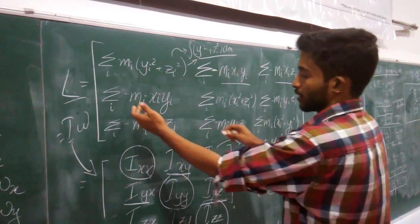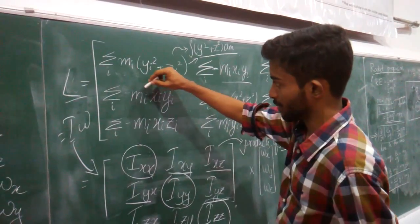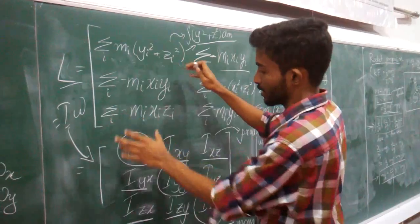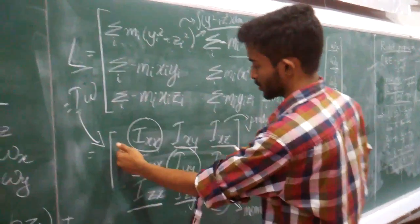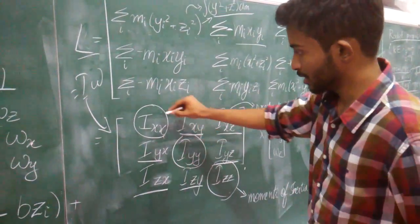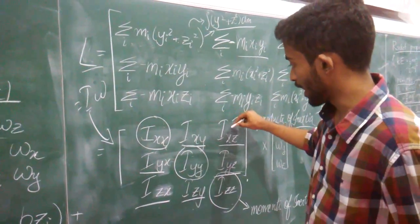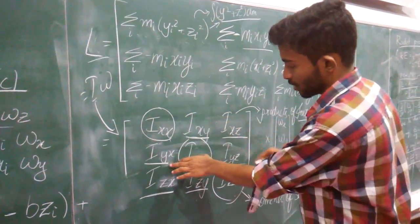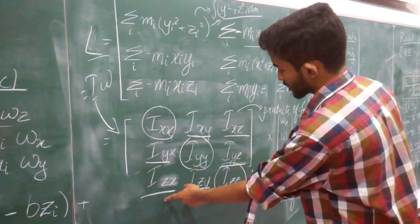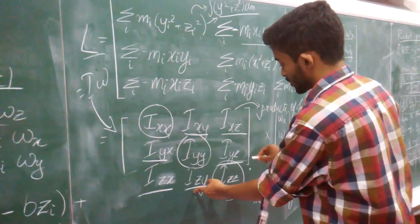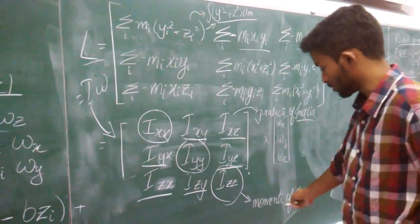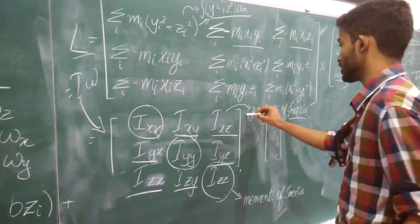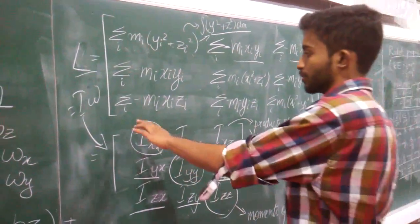The off-diagonal elements include terms like m_i × x_i·y_i. We represent this full matrix using moment of inertia notation: I_xx, I_xy, I_xz, etc. This matrix is symmetric, meaning I_xy = I_yx, I_zx = I_xz, and I_zy = I_yz. The diagonal elements are the moments of inertia, and the off-diagonal elements are the products of inertia.